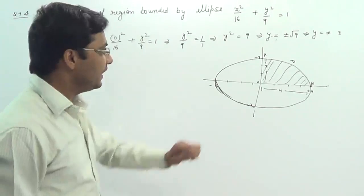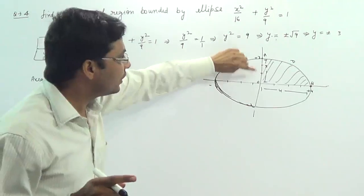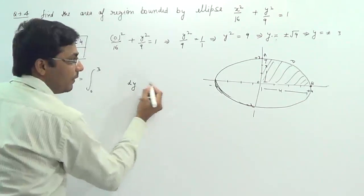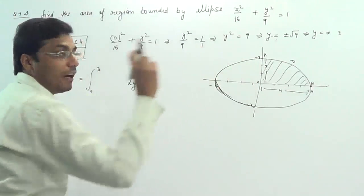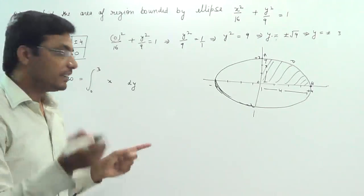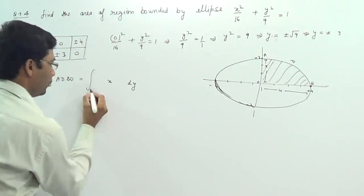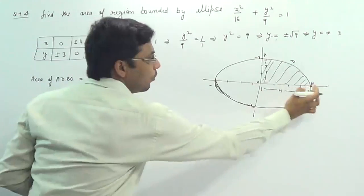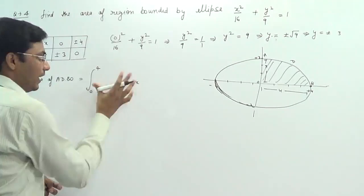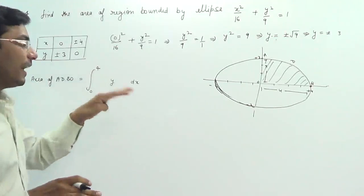We can use two methods. Either take the limit 0 to 3 with dy, using x values from the equation, or use the limit 0 to 4 on the x-axis with dx and y. You can use either method and will get the same answer.